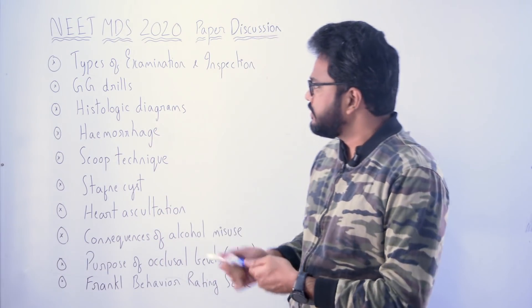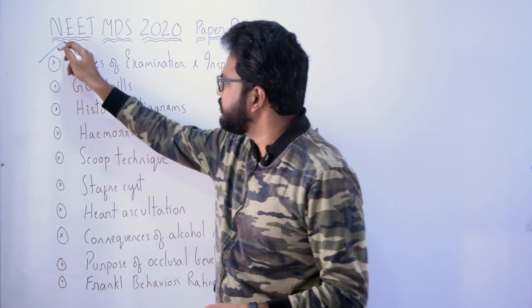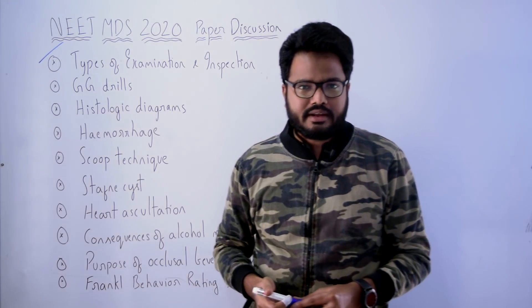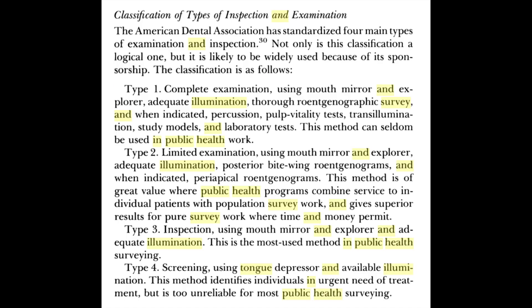Starting with the types of examination and inspection based on area classification. As you can see, we have various classes or types of inspection/examination given by the American Dental Association, which has standardized four main types. Type 1: complete examination using mouth mirror, explorer, and adequate illumination, and also a thorough radiographic survey — and when indicated, percussion, pulp vitality test, transillumination, study models, laboratory tests, etc.